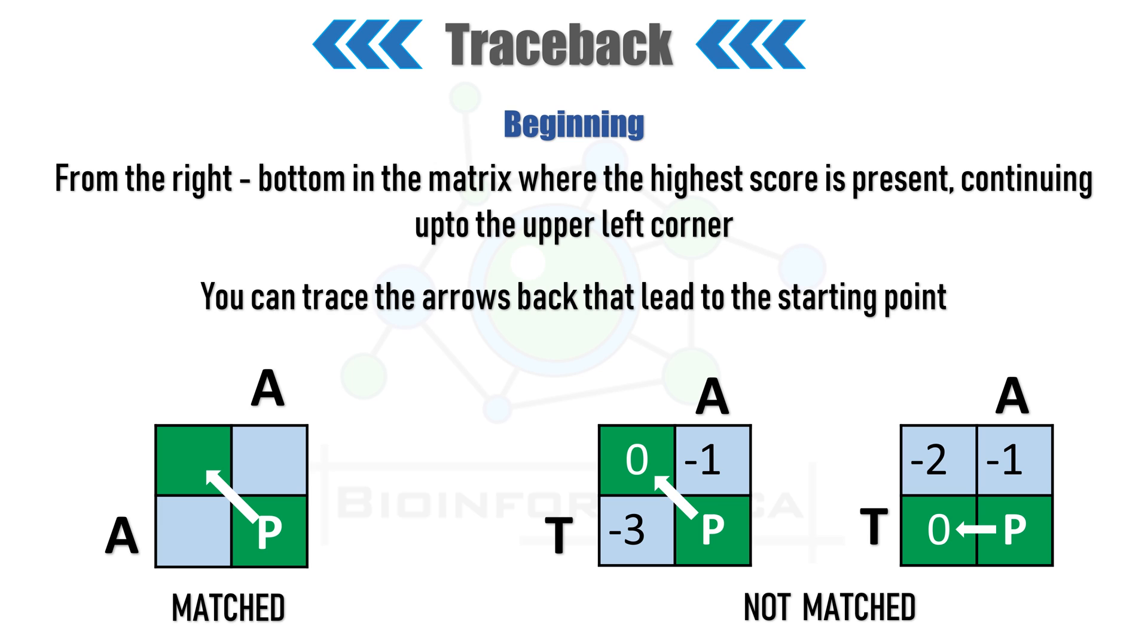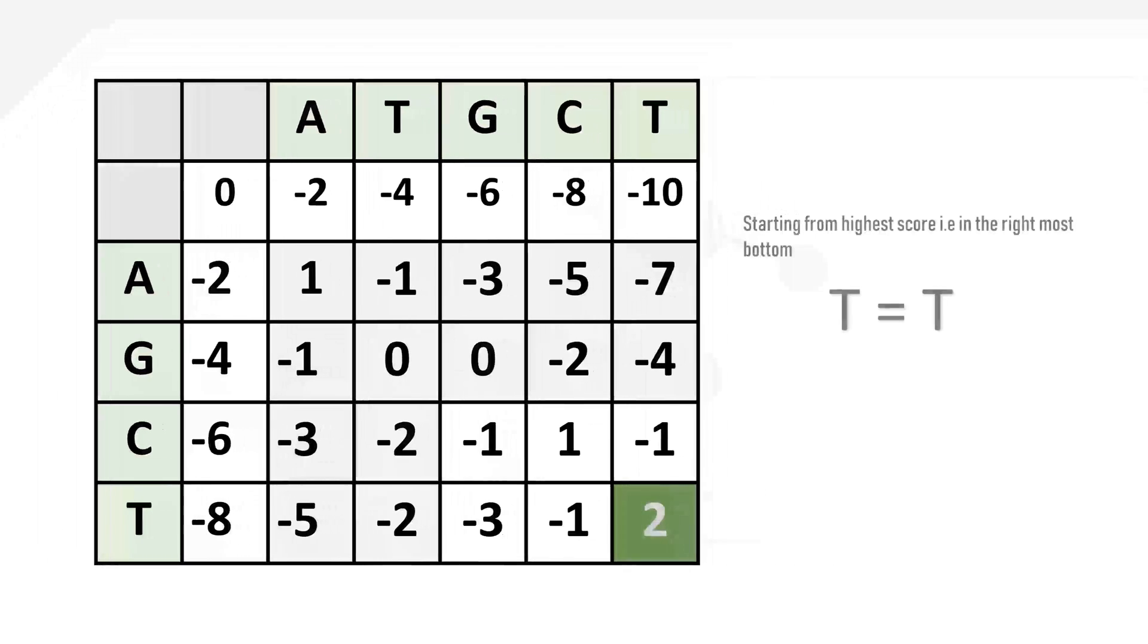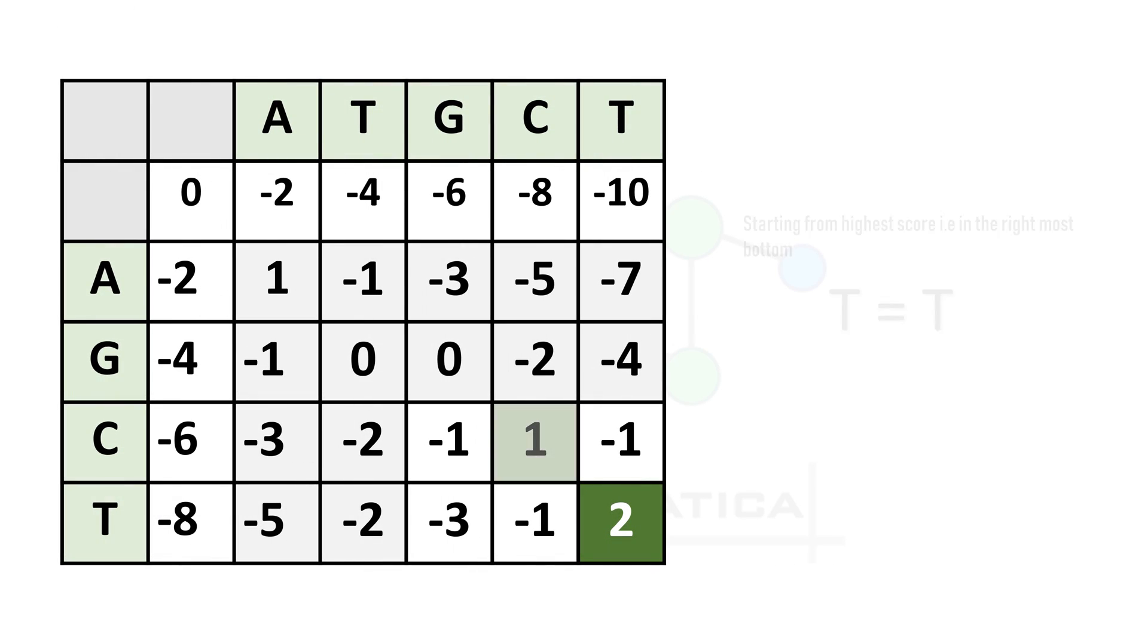In the first box, the corresponding letters are matched, so it will go diagonally. For the second and third box, the letters are not matched, so the traceback will go towards the highest neighbor. Let's try the traceback. We start from the right bottom corner. Here, the corresponding letters are T and T, so it's a match. The arrow will go diagonally. Here, the corresponding letters are C and C, so it will go diagonally again. Here we got G and G, that's a match, so the arrow will go diagonally again.